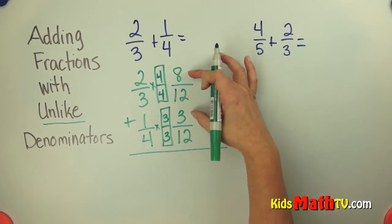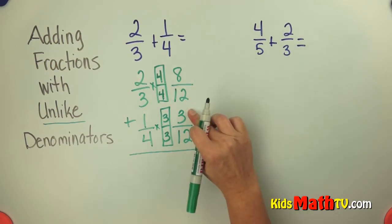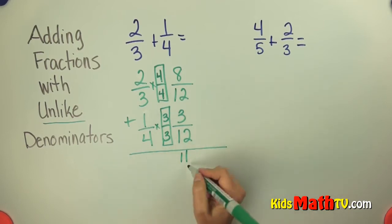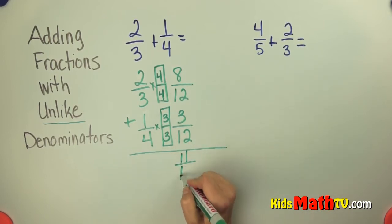So now I can simply add the numerators together. 8 plus 3 is 11. So we have 8 12ths and 3 12ths. Give us 11 12ths.